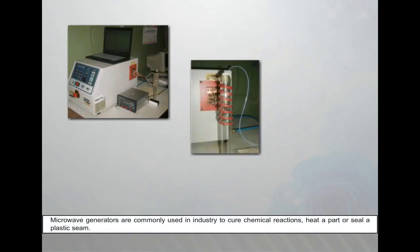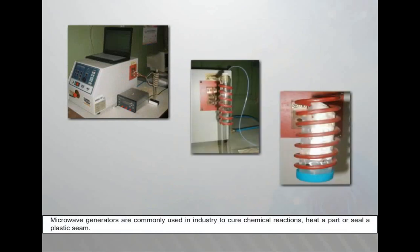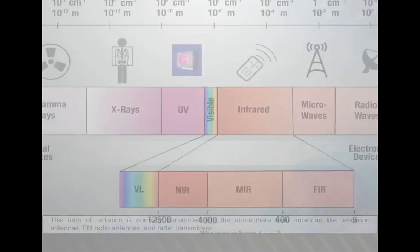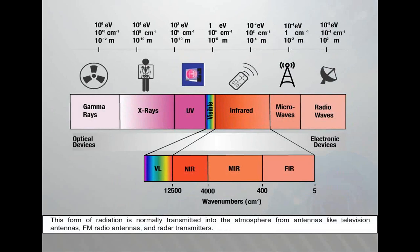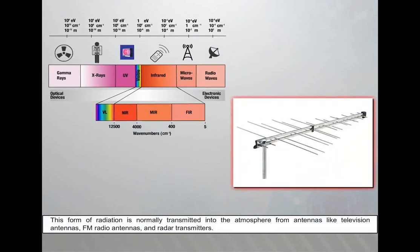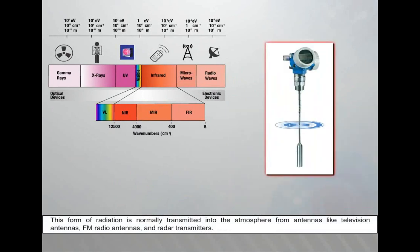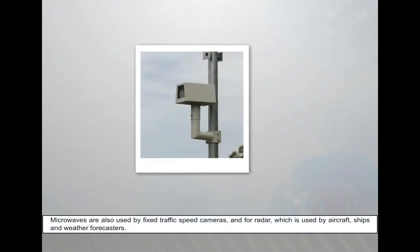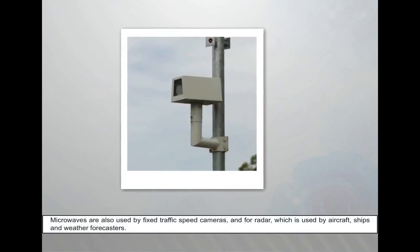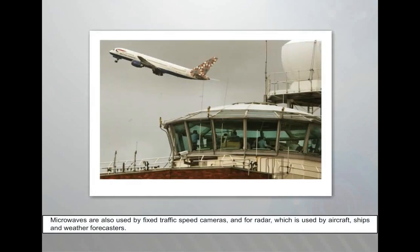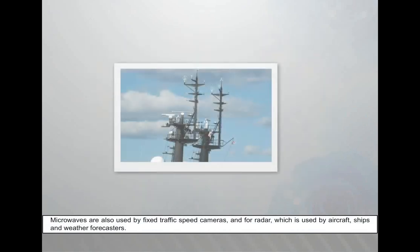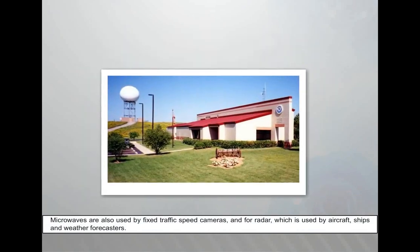Microwave generators are commonly used in industry to cure chemical reactions, heat a part, or seal a plastic seam. This form of radiation is normally transmitted into the atmosphere from antennas like television antennas, FM radio antennas, and radar transmitters. Microwaves are also used by fixed traffic speed cameras and for radar, which is used by aircraft, ships, and weather forecasters.